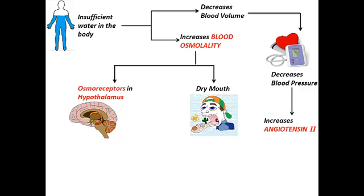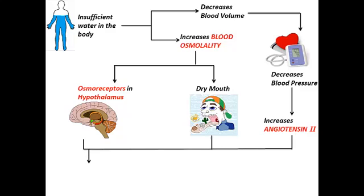So the increment in angiotensin 2, dryness of our mouth, and osmoreceptors that sense the increment in blood osmolality in the hypothalamus simultaneously stimulate the thirst center in the hypothalamus. Whenever the thirst center is stimulated, it sends a signal to the brain that you are feeling thirsty.